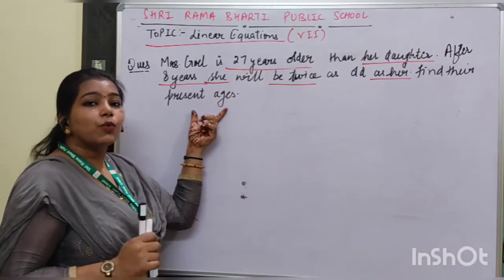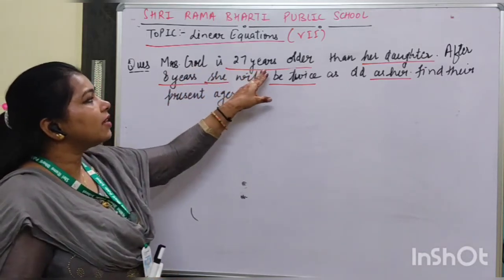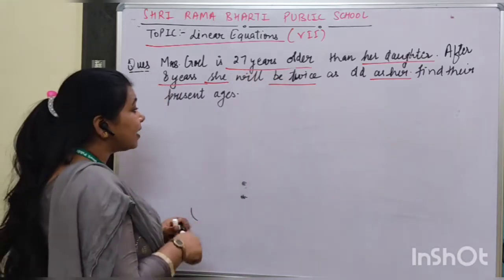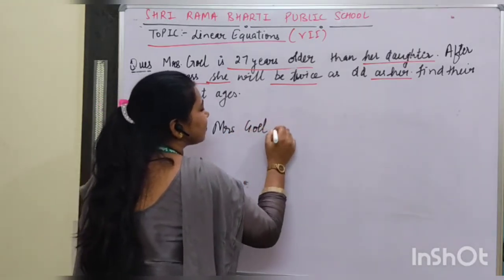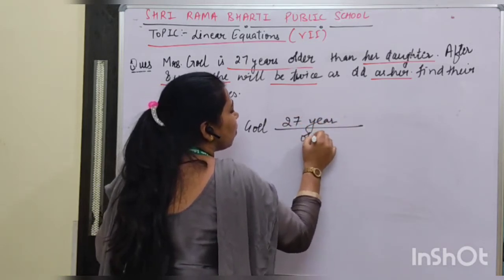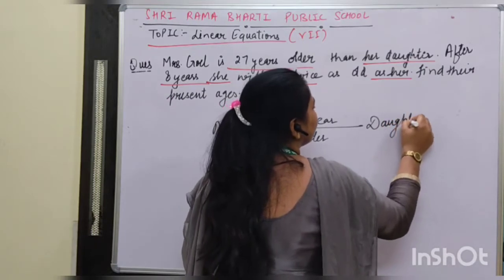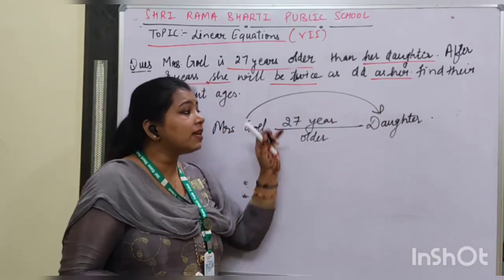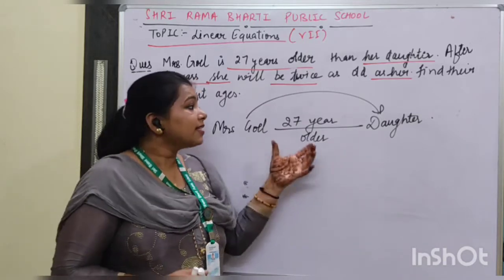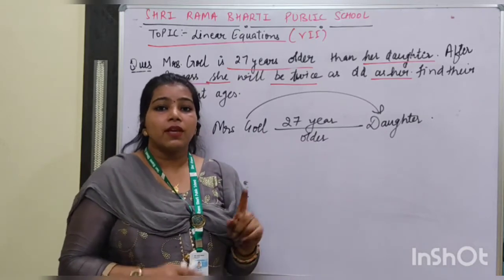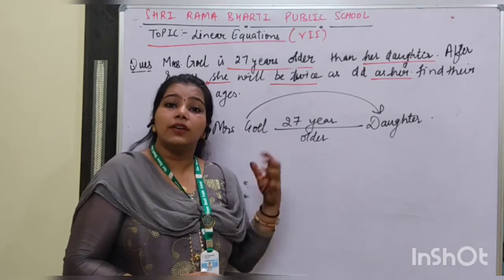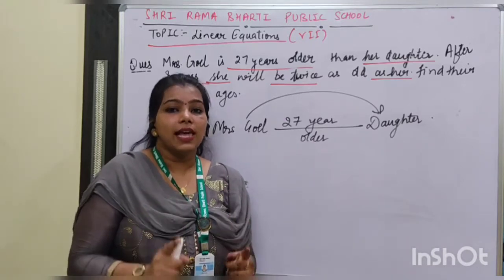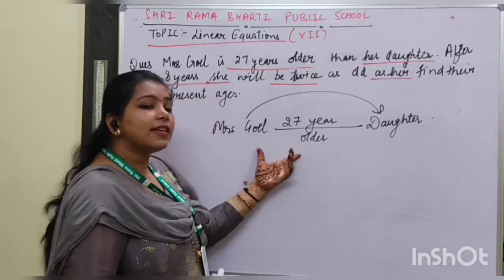We have to read the question carefully. The question says: 'Mrs. Goyal is 27 years older than her daughter.' Here, Mrs. Goyal is being compared with her daughter. In every word problem, two conditions will be given. The first condition helps you find the given quantities in terms of a variable, and the second condition helps you frame the equation.